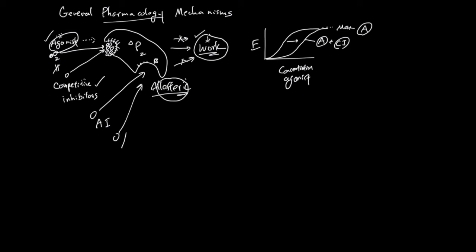You have one category called allosteric inhibitors and another called allosteric activators — basically the opposite of each other. If you administer an allosteric inhibitor and agonist together, the effect goes up but plateaus lower — allosteric regulation essentially cripples the protein's ability to do its maximum work.